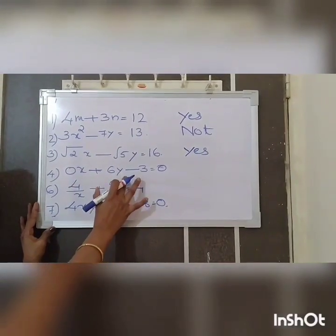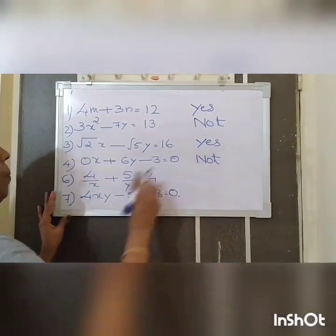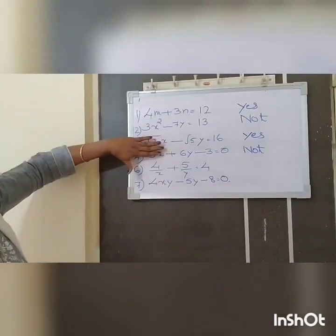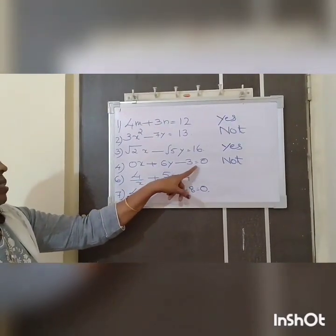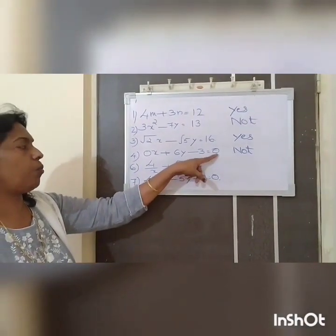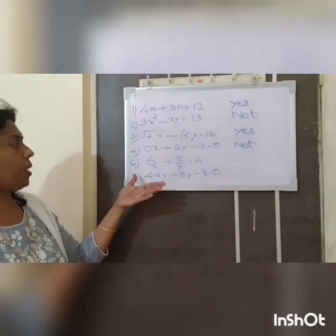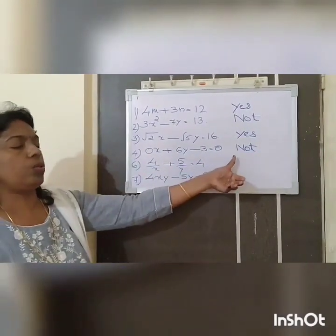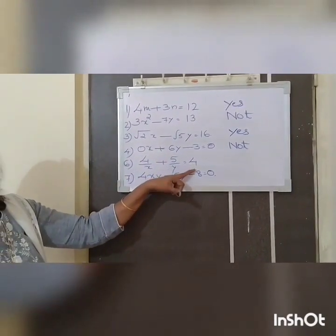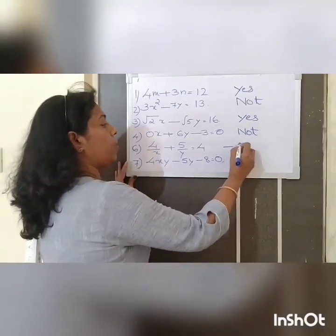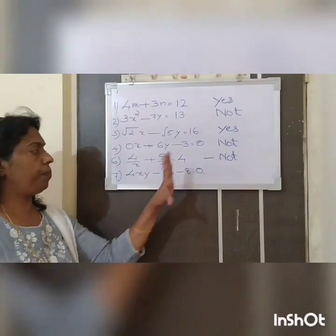Fourth equation: 0X plus 6Y minus 3 equals 0. This is not a linear equation in two variables because the first term 0X means that portion is completely 0. Therefore you get 6Y minus 3 equals 0, which is an equation in one variable. Similarly, question 5 is also not a linear equation. For question 6, the degree of X and Y equals negative 1, so it is also not a linear equation.